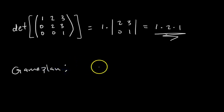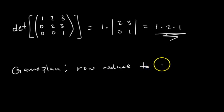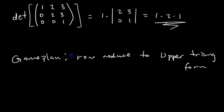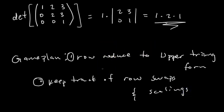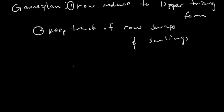Here's the game plan for finding the determinant through row reduction. Step one: row reduce to upper triangular form. Step two: keep track of row swaps and row scalings as you go, because certain row operations change the determinant. Row equivalent matrices don't necessarily have the same determinant, so we need to understand how each operation affects it.